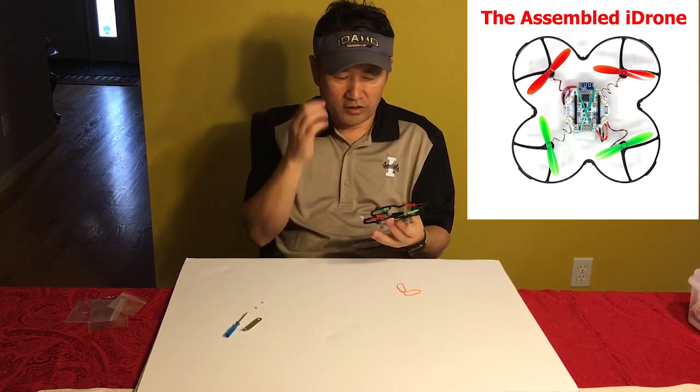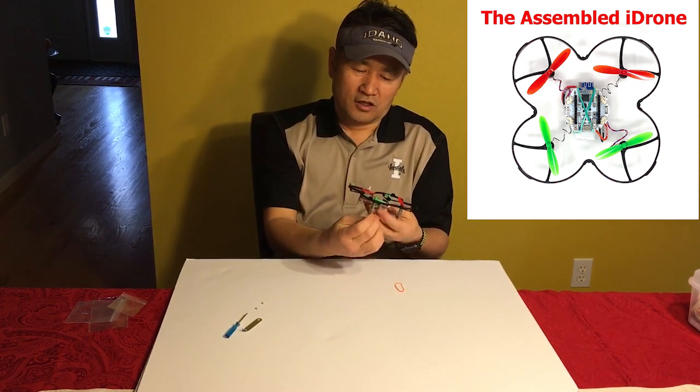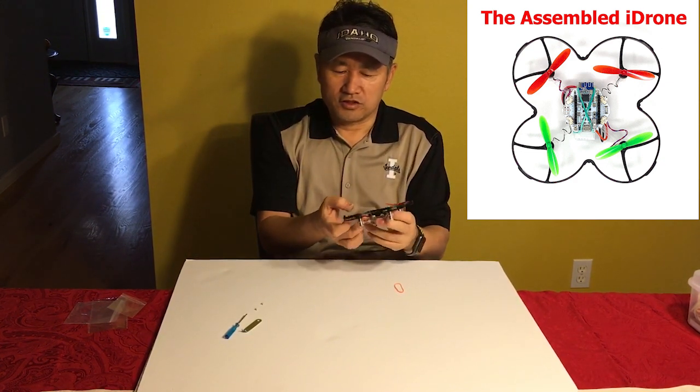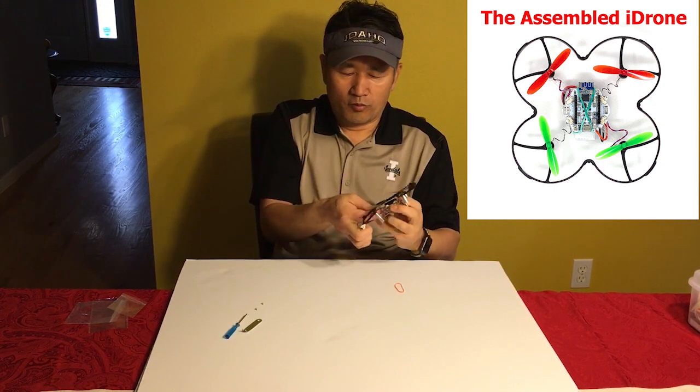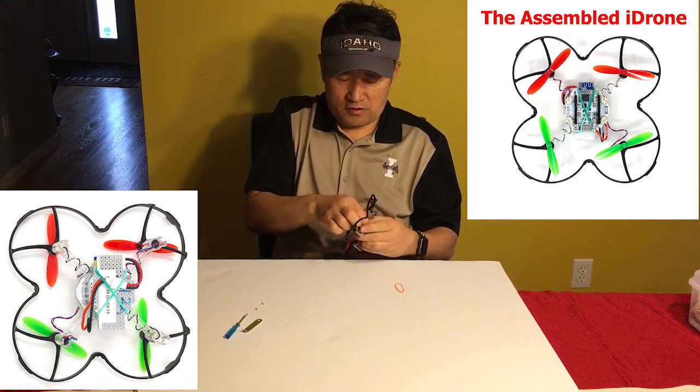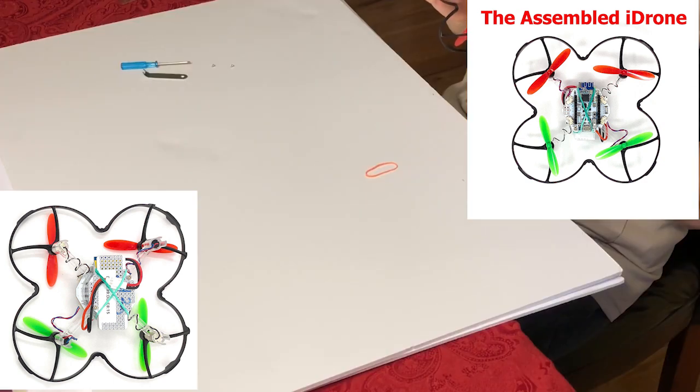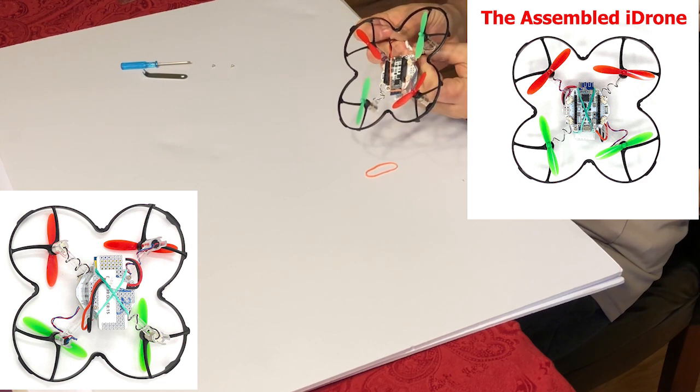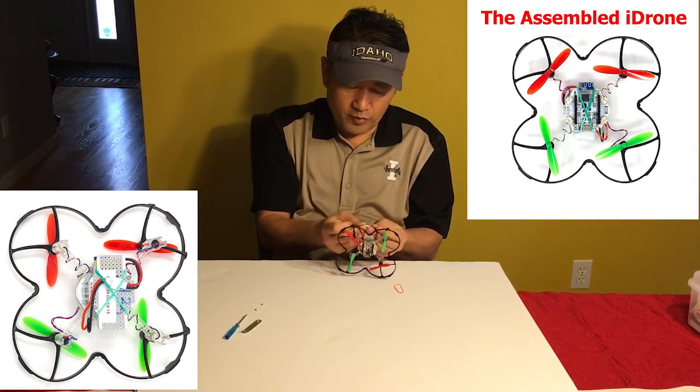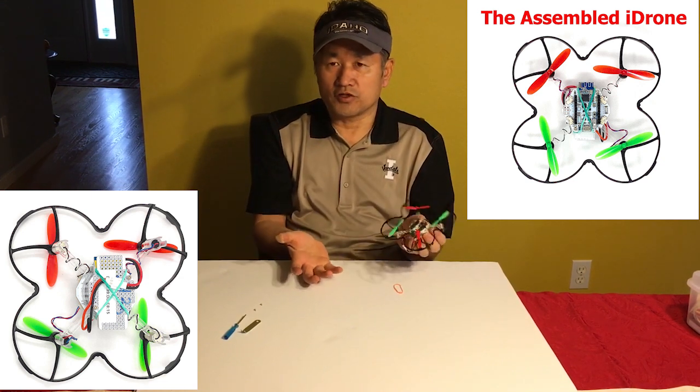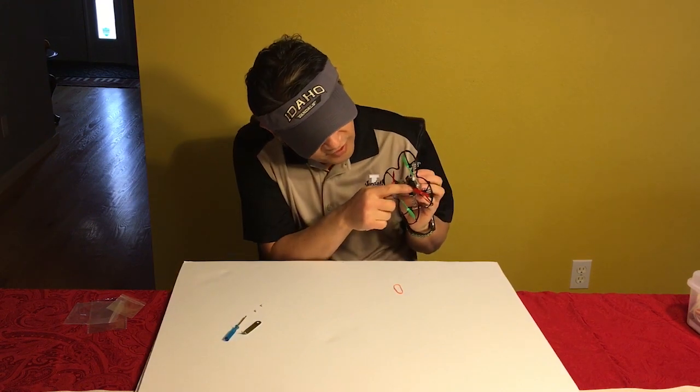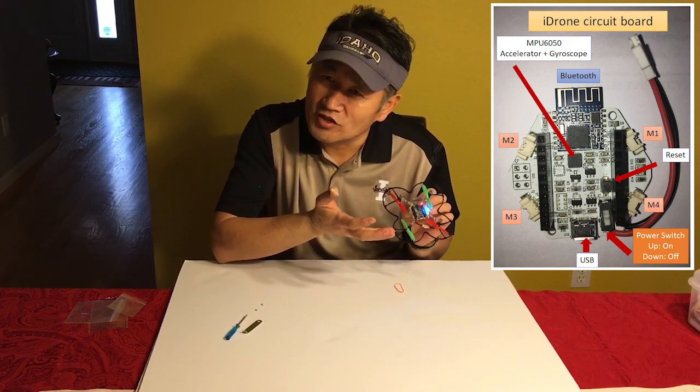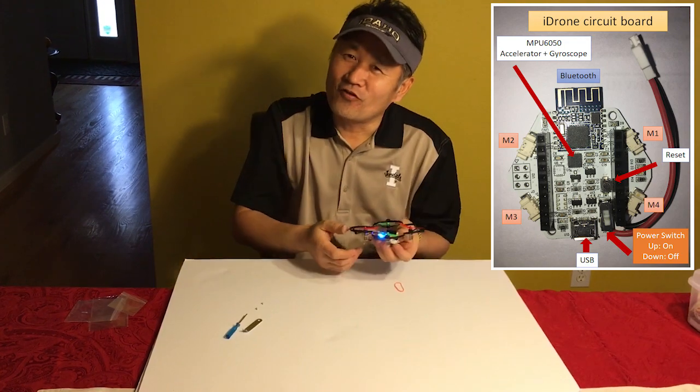And once you complete this, we need to secure this whole body just in case when the drone flies the battery falls off. To protect that, you may use this rubber band to secure the whole body like this, using the Bluetooth head like that. And then you can connect the battery like this. Once you connect the battery, use this switch, a very tiny switch here. Just turn this switch on and you see the LED light. It's ready to fly. Okay. Thank you for watching. Bye.